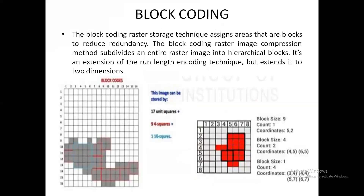The next technique is block coding. Unlike the previous two techniques that represent spatial data by integer values, in block coding the spatial data is shown as a shaded region — all the red shaded regions represent the presence of spatial data in the grid. In block encoding, the first step is to divide the shaded region into blocks. Regions with the same number of rows and columns are represented as one single block, and all blocks are arranged in a hierarchical manner — from the largest block size down to the smallest.